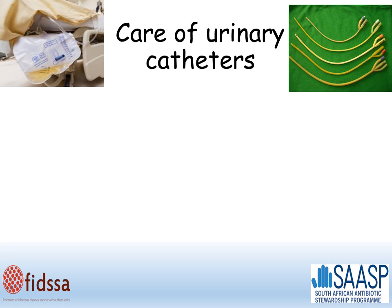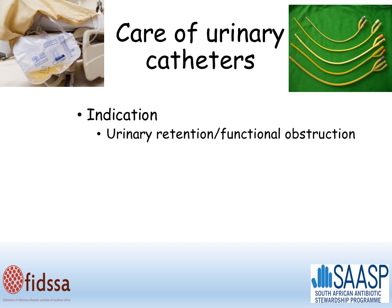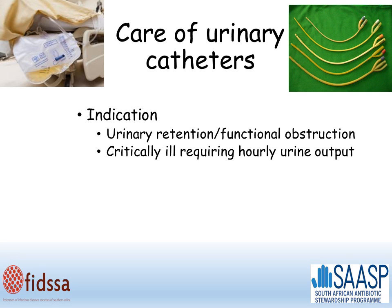Moving on to care of urinary catheters. There are essentially only three indications for a urinary catheter, and it's important that you are clear that your patient has one of these indications if a catheter is in situ. The first is urinary retention or functional obstruction — this can mean anything from obstruction due to an enlarged prostate to a neurological problem and a neuropathic bladder. Secondly, critically ill patients requiring urine output measurement, such as patients in surgery, in the intensive care unit, or medically critically ill patients.